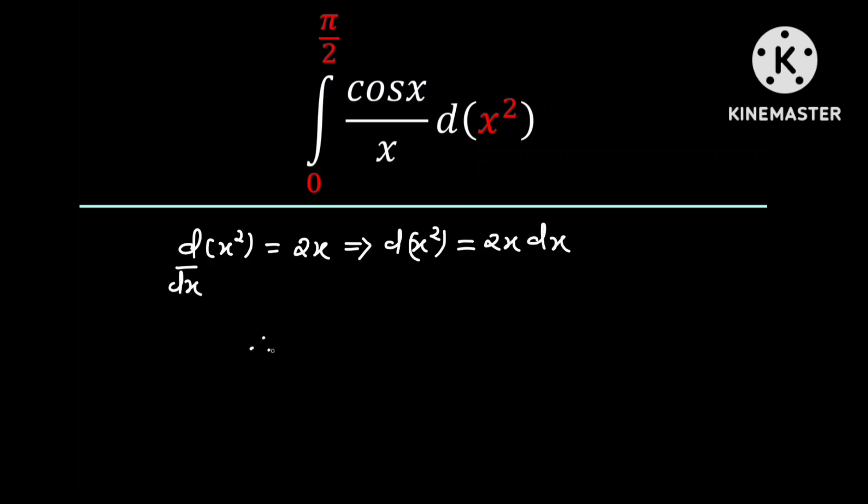And therefore the integral from 0 to pi over 2 of cosine x divided by x with respect to x squared is equal to the integral from 0 to pi over 2 of cosine x divided by x multiplied by 2x dx.